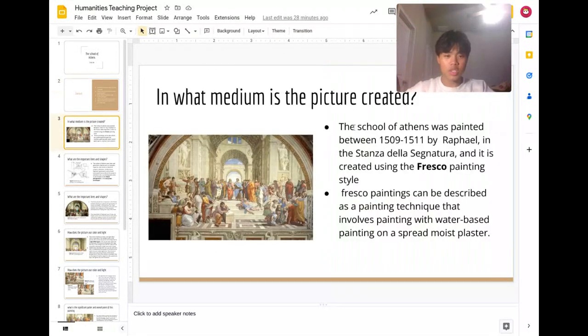In what medium is the picture created? The School of Athens was painted between 1509 to 1511 by Raphael. It is located in the Stanza della Signatura and it is created using the fresco painting style. Fresco painting can be described as a painting technique that involves painting with water-based paints on spread moisture plaster. The School of Athens can be seen in this picture right here.